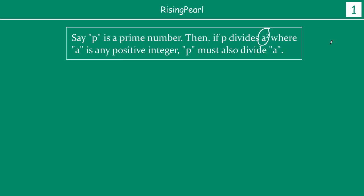For example, let us just assume that a is maybe 13 — I'm randomly thinking of a number. So a squared will be 13 squared. What the theorem is saying is: if p is any prime number, we don't know what p is, but if it is given to you that 13 squared is divided by p, then the theorem says that 13 should also be divisible by p. That is what the theorem says.